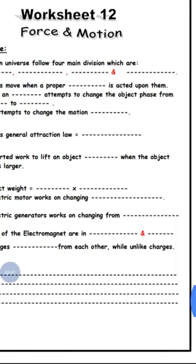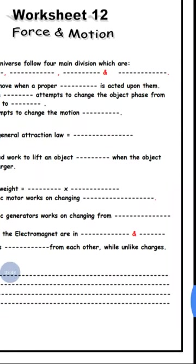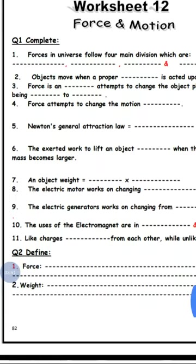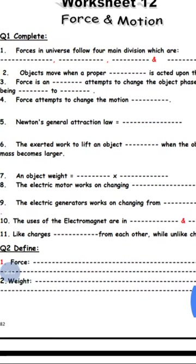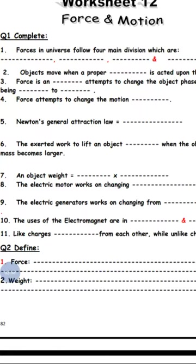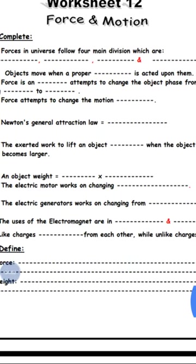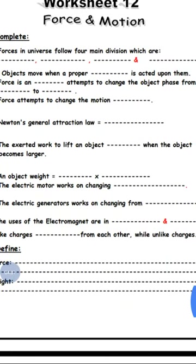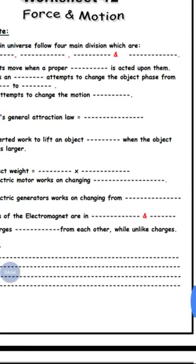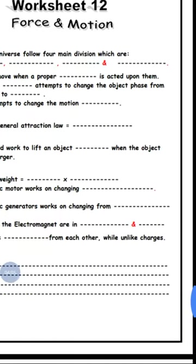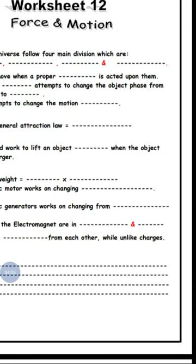Number nine: the electric generator works by changing mechanical energy into electric energy. Number ten: the uses and importance of electromagnetism include the electric bell and electric cranes.